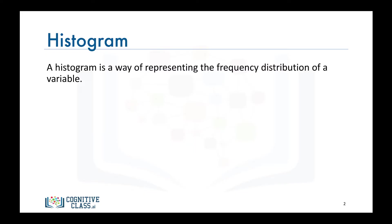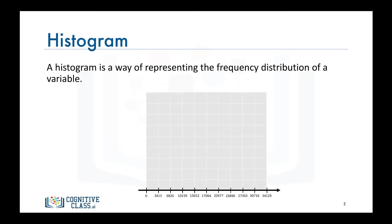For example, let's say the range of the numeric values in the dataset is 34,129. The first step in creating the histogram is partitioning the horizontal axis into, say, 10 bins of equal width. Then we construct the histogram by counting how many data points have a value between the limits of the first bin, the second bin, the third bin, and so on.